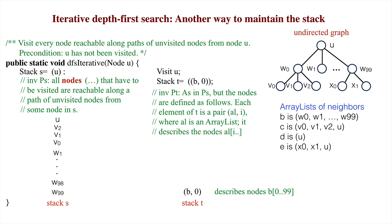In the implementation using stack T, a peak at the top stack element B, 0 gives B index 0. So W0 is visited, and B0 is changed to B1. Then, since W0 was visited, C0, which contains W0's neighbors, is pushed onto stack T.